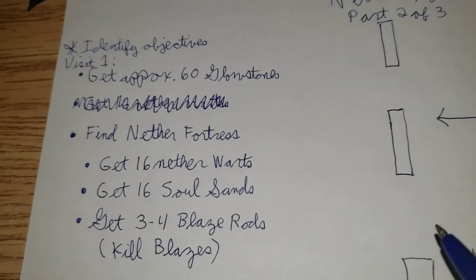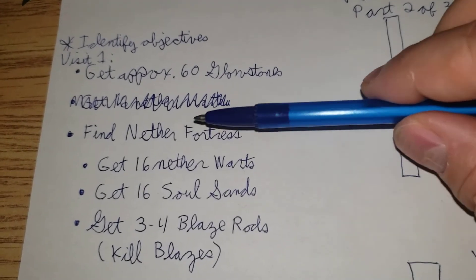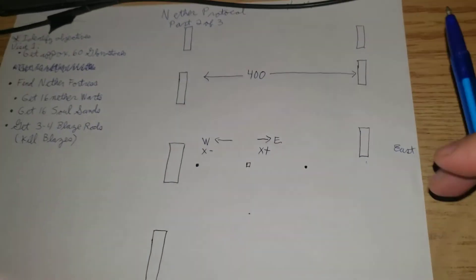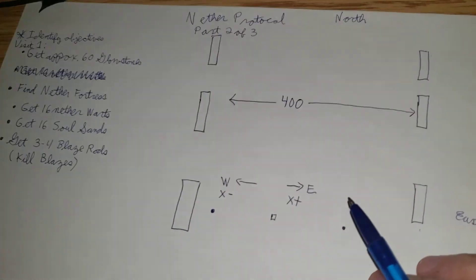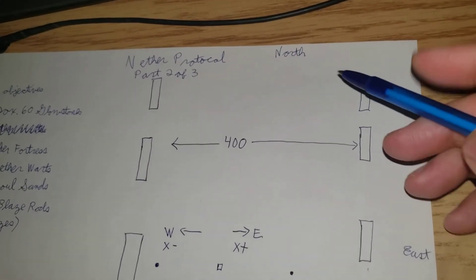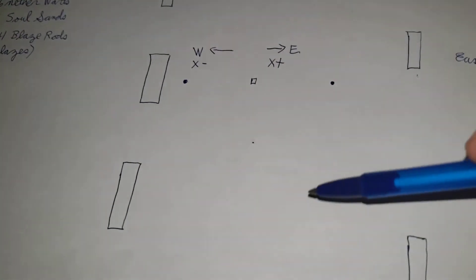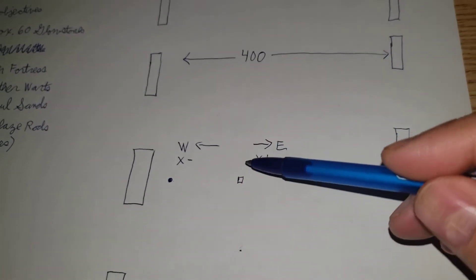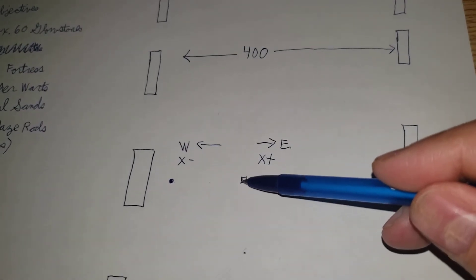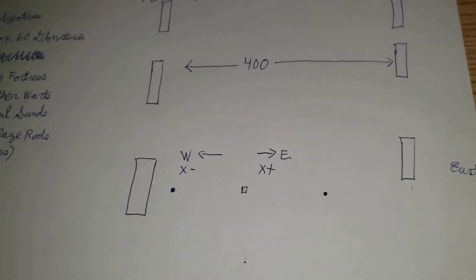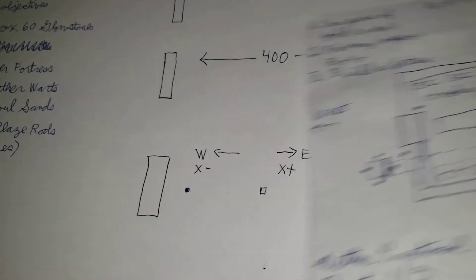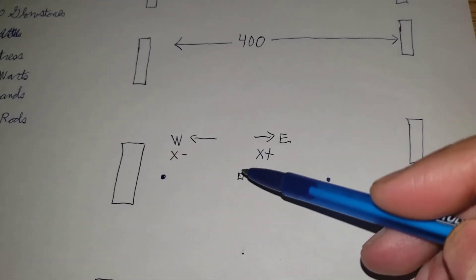So the rest of this video is going to be about finding the Nether fortress. How to find it. All right. So this is north, east, south and west. And this is your fortress that you built in part one. Remember that? So this is your fortress here.